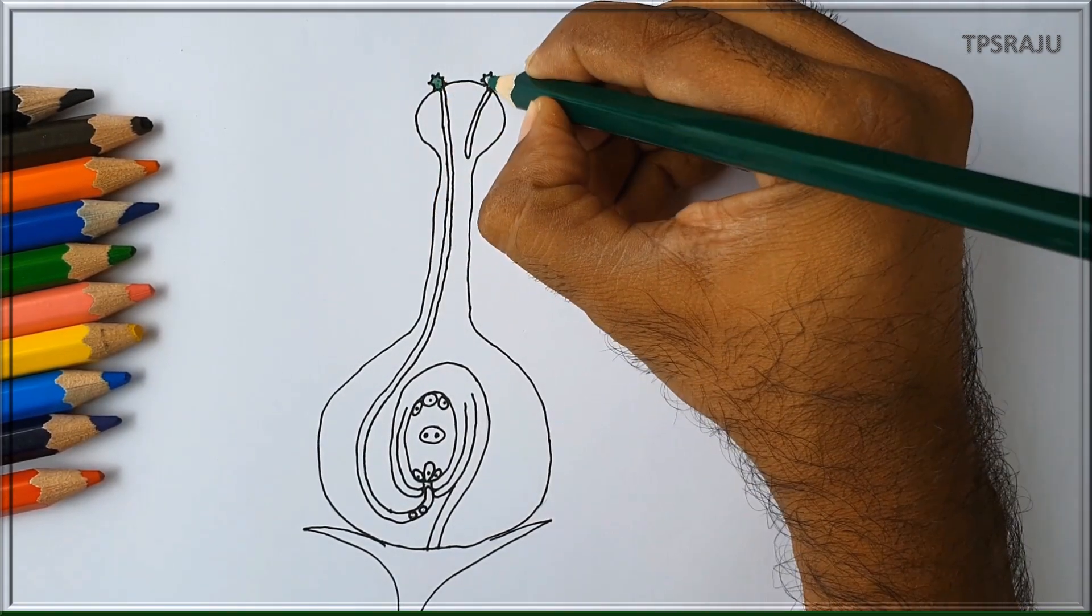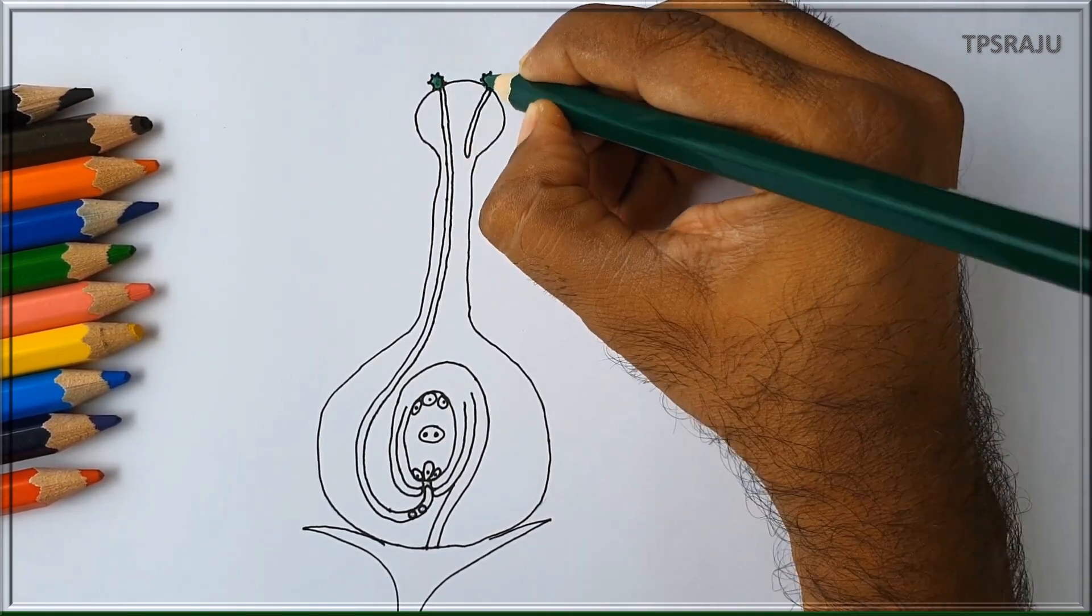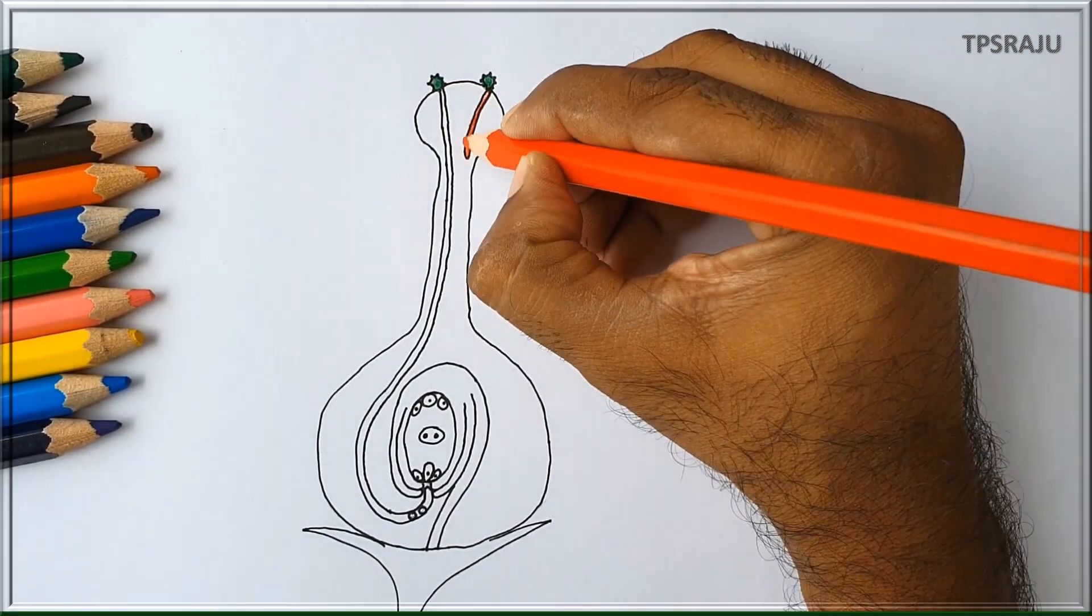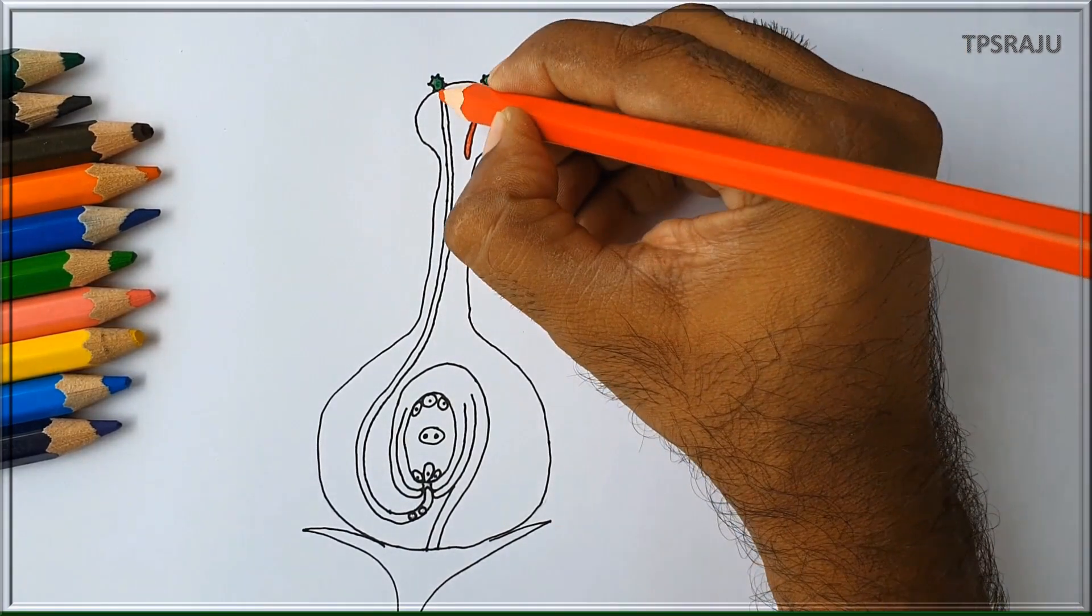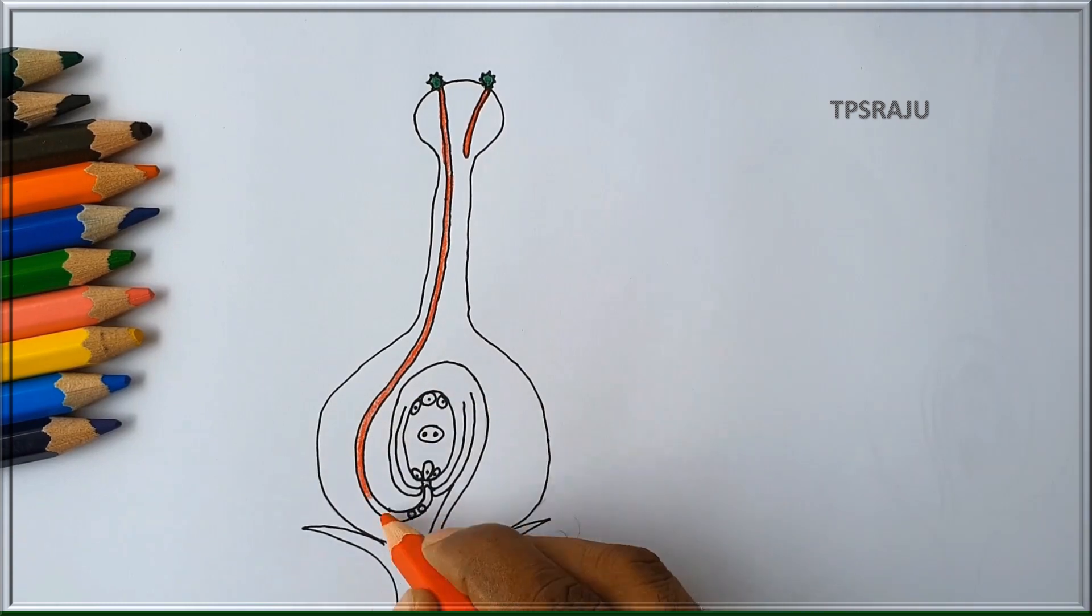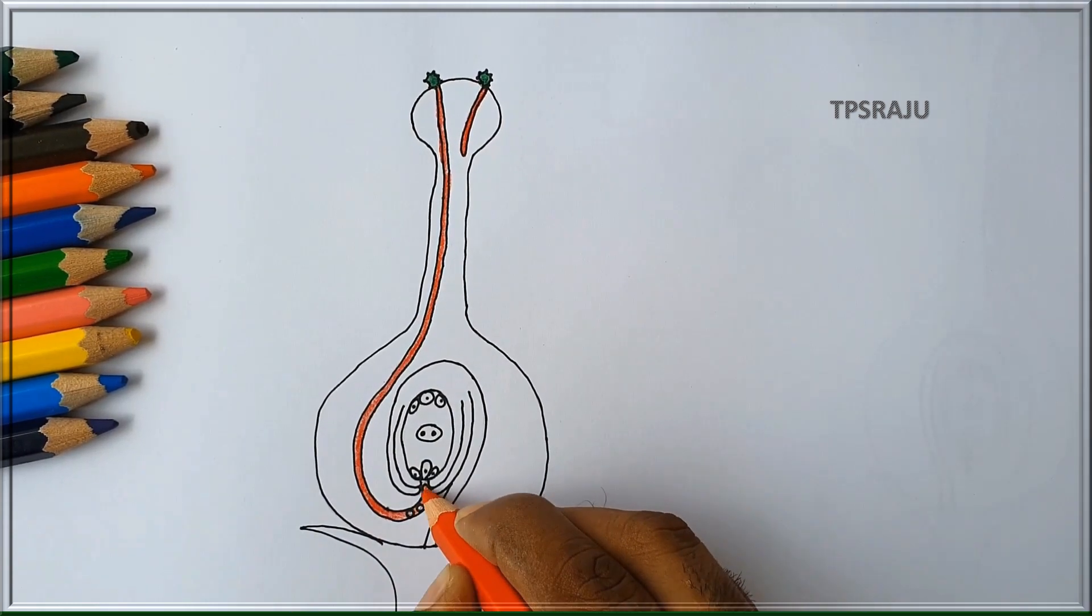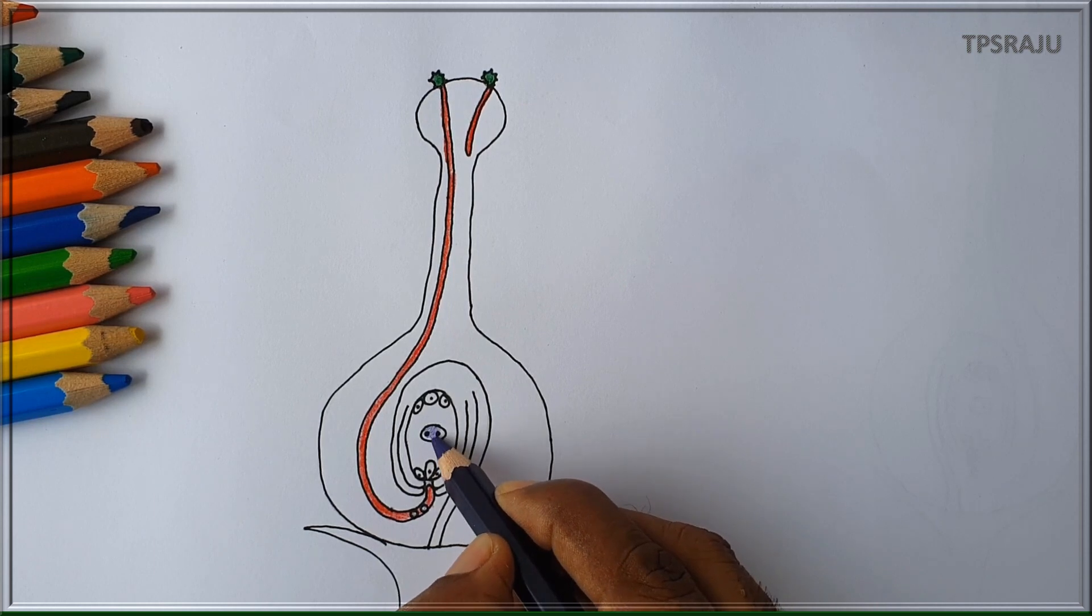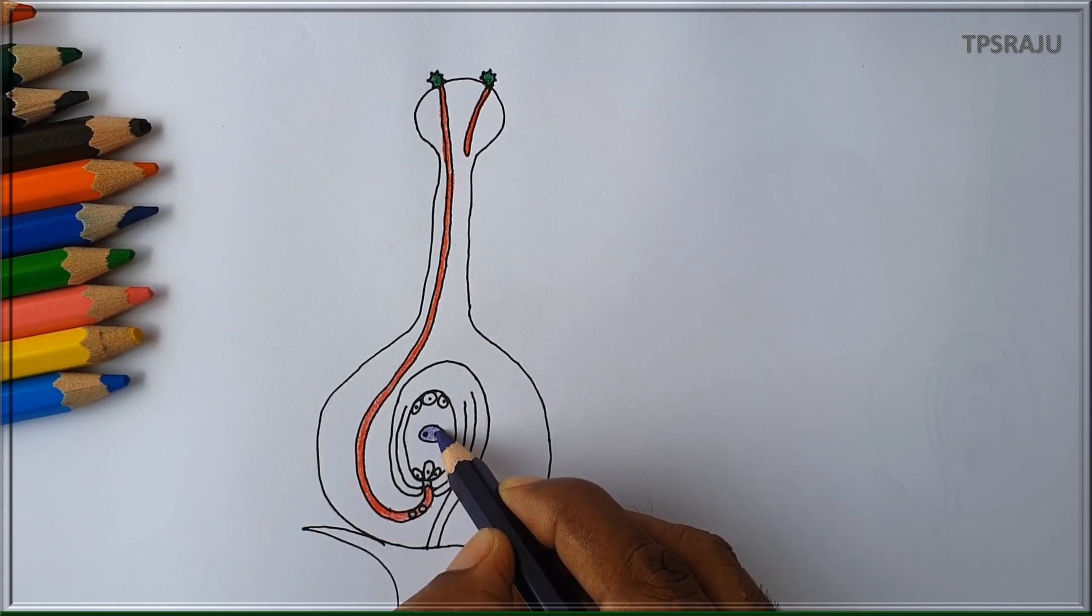Applying dark green color to pollen grains. Red color to pollen tube. Violet color to secondary nucleus.